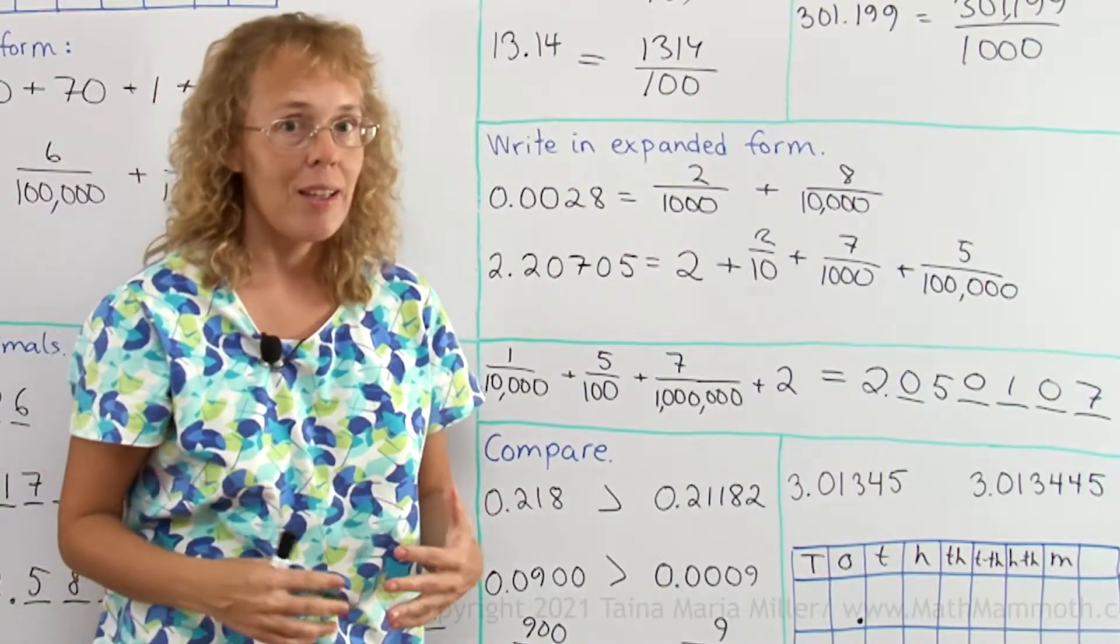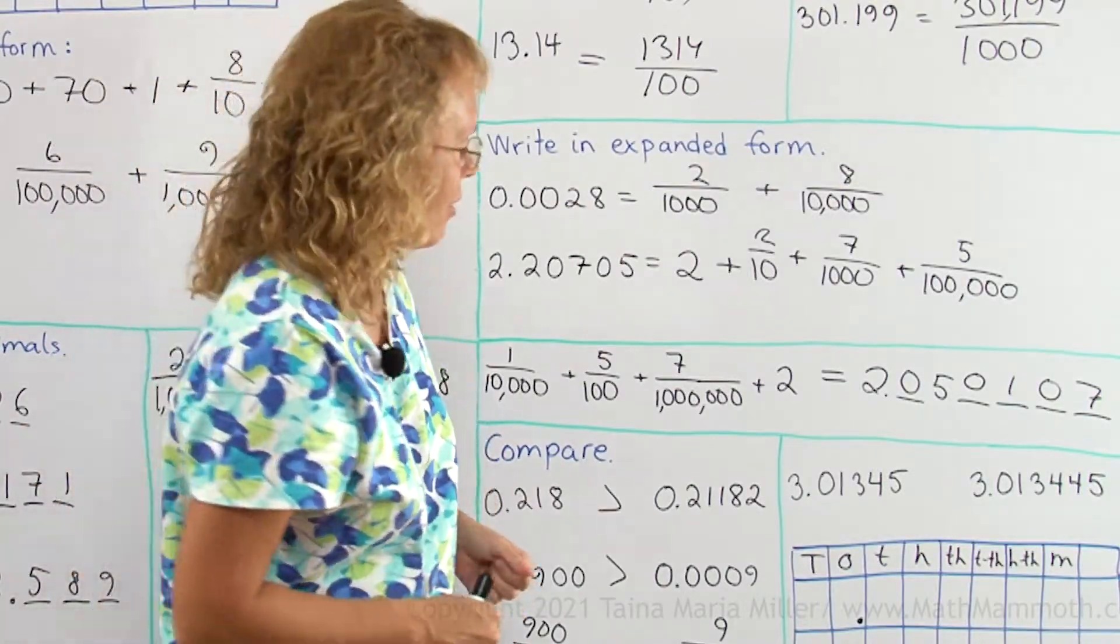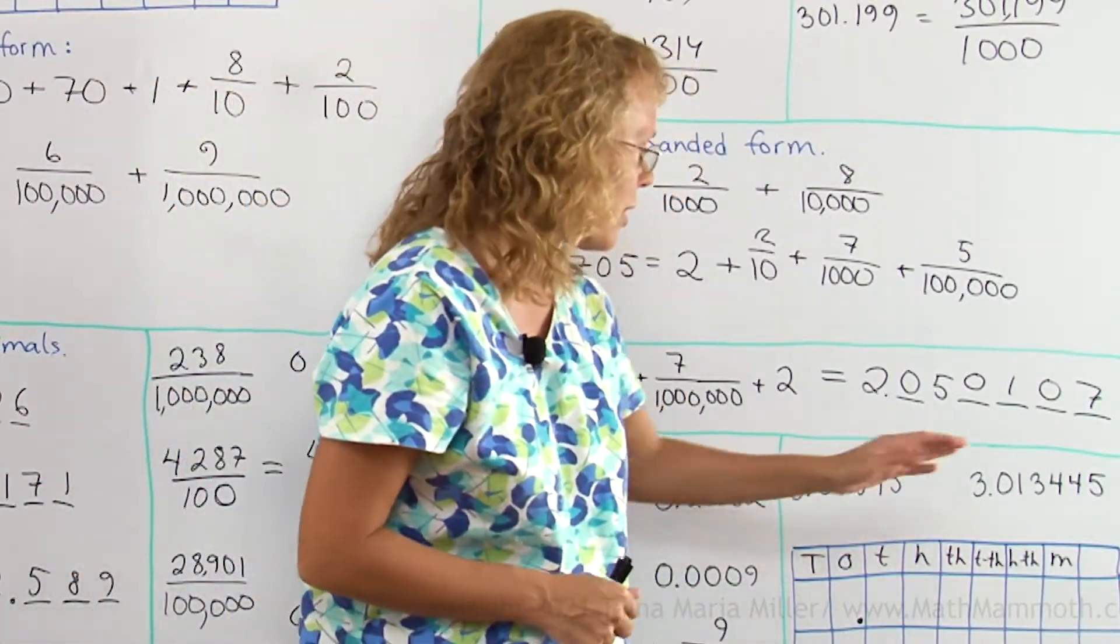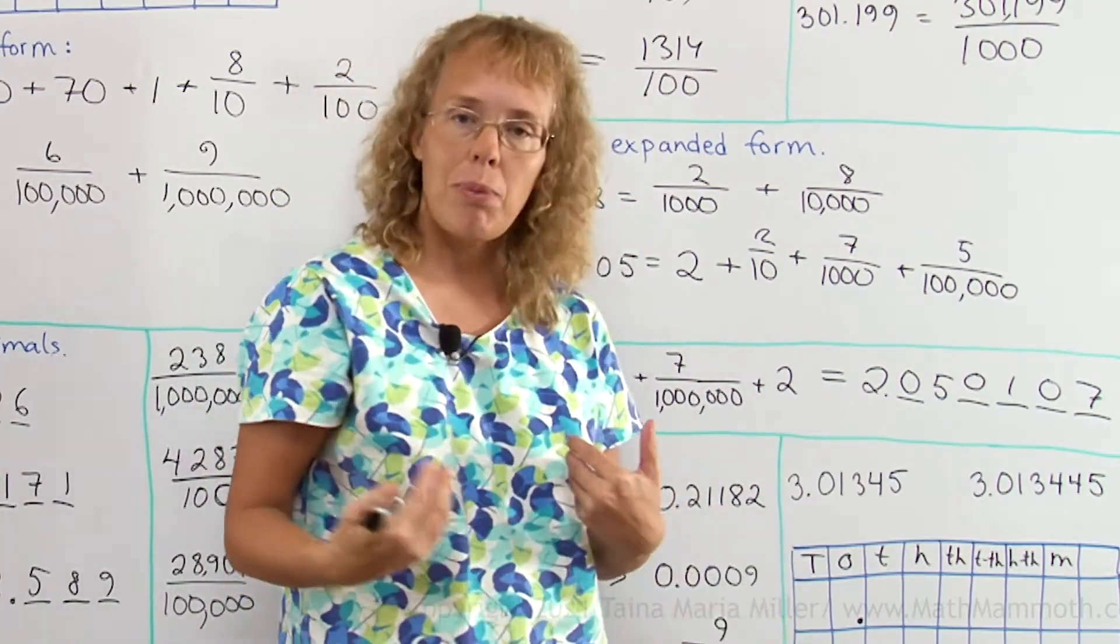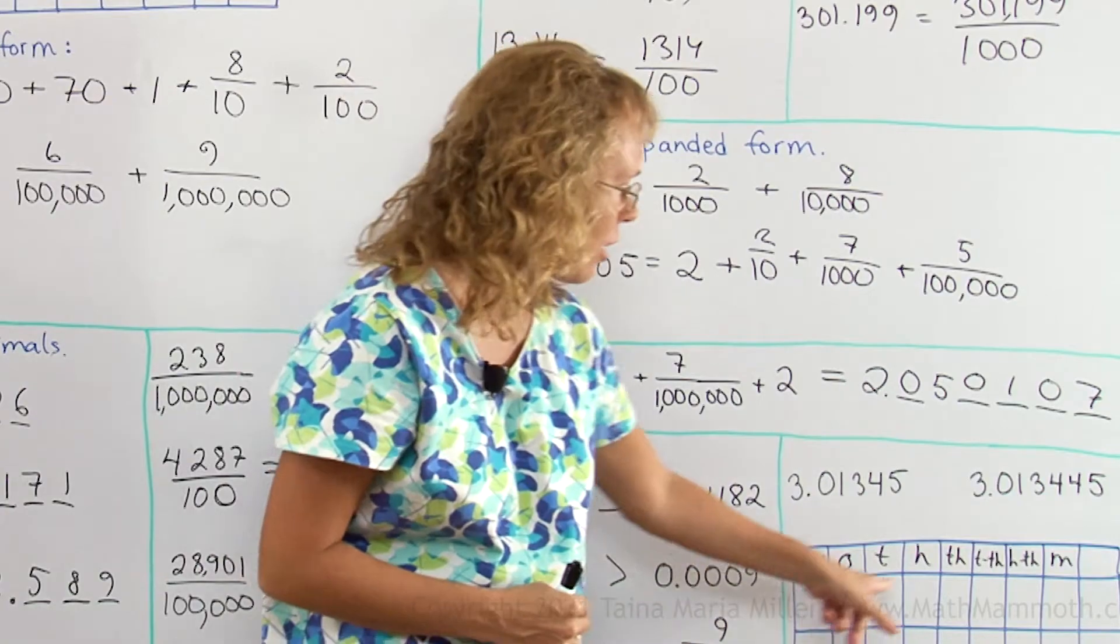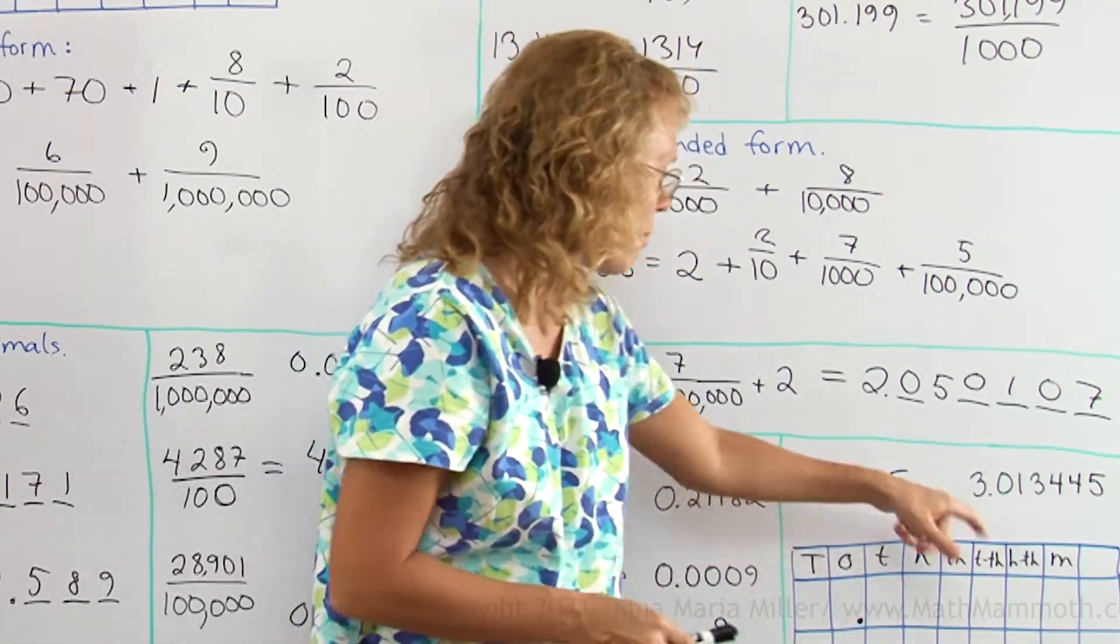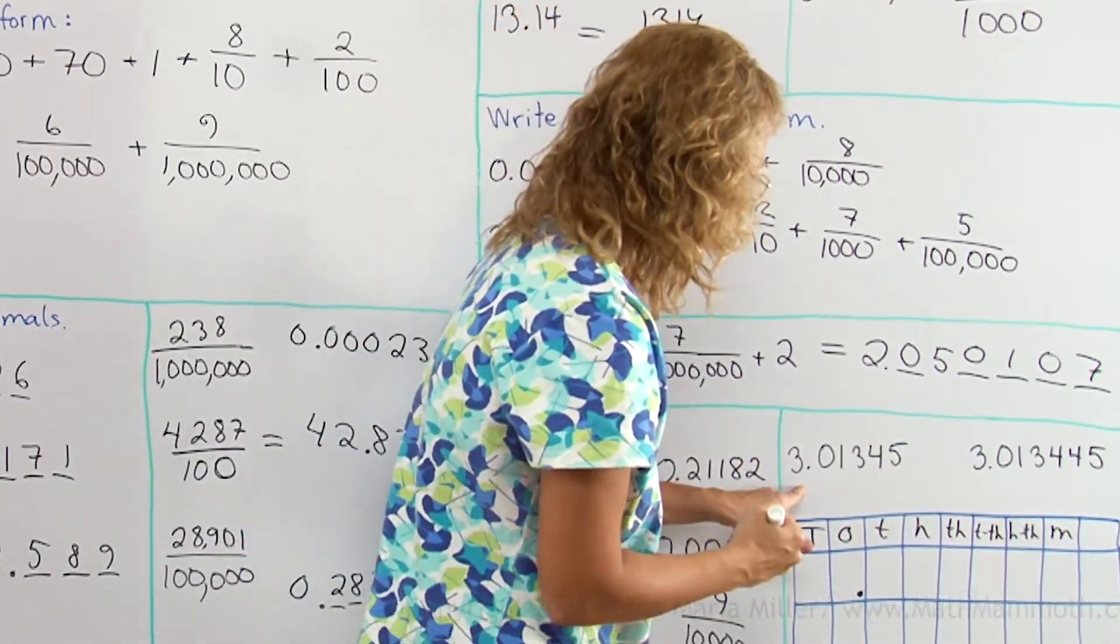And lastly, one more way, one more help for comparing decimals. If you have two decimals and they look kind of that you are not sure, you can write both of them into a place value chart, which I wrote here. We will place both numbers in there. Here's three points, so I'll start here.